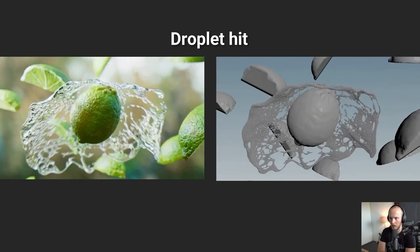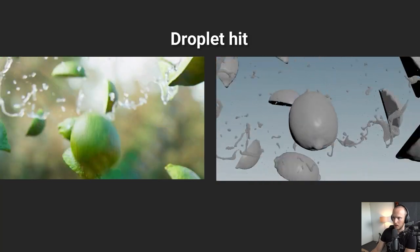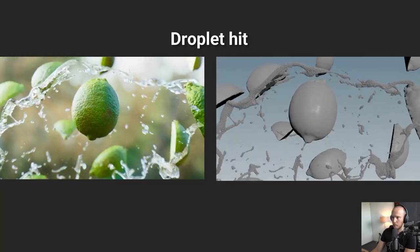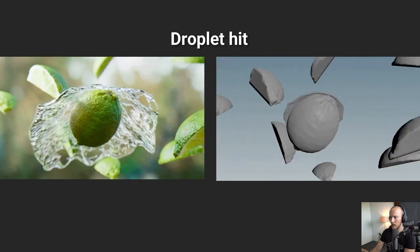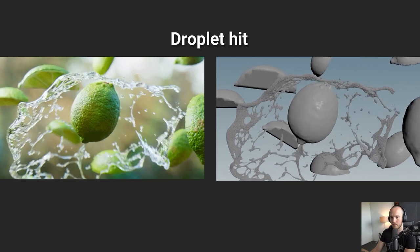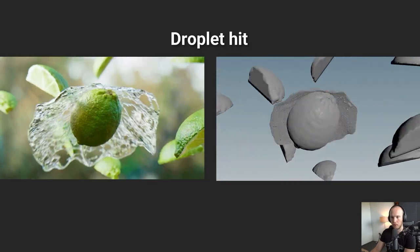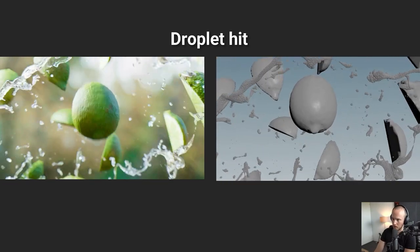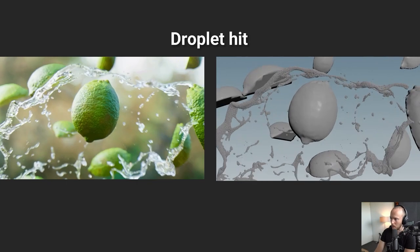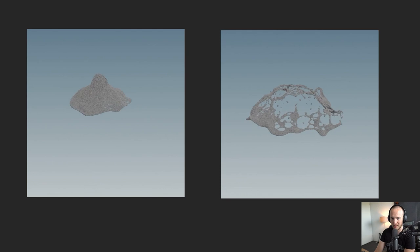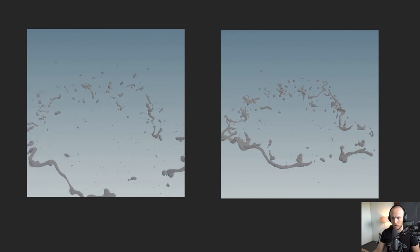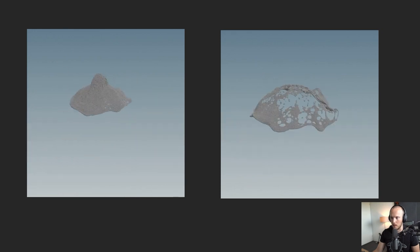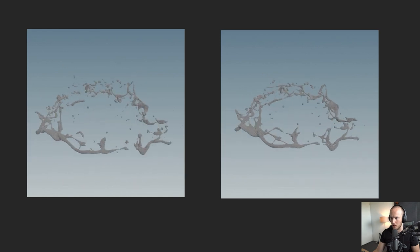Next shot: droplet hit. You can see the particle sim with the nice tendril stuff. Something like that is possible in FLIP but it's just a lot harder. It's actually not just a droplet falling — I emitted some fluid onto the lime like this and then retimed it. Here you can see it flowing over, sort of quickly breaking up. You can really see the surface tension at work, just like it would in real life.